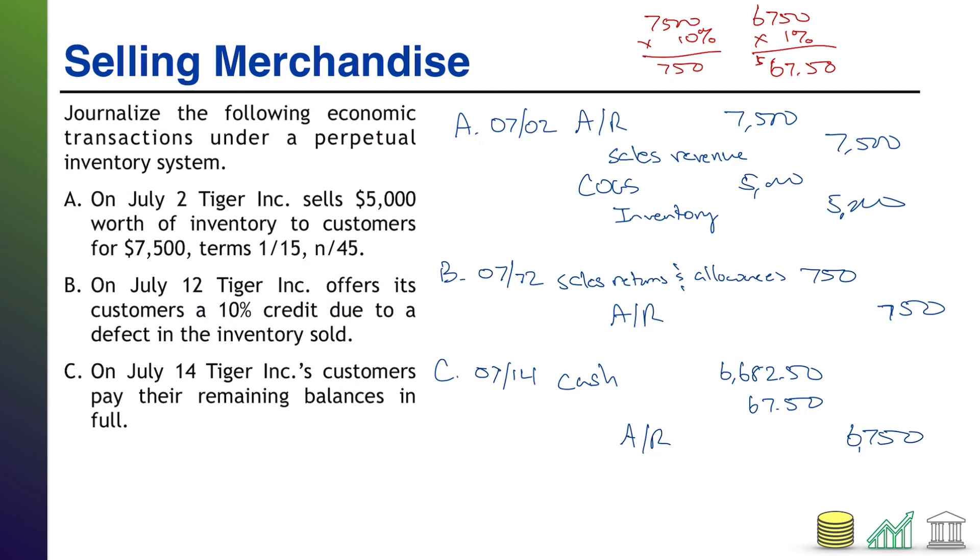Well in this case, once again, just like we lowered our sales revenue using a contra account, we're lowering our sales revenue again because we gave them a discount. Only this was an official discount as part of payment plans. This wasn't an allowance or a return. This is just a regular old discount. And the contra account for that is called sales discount.